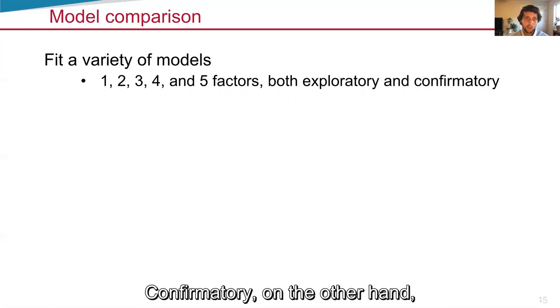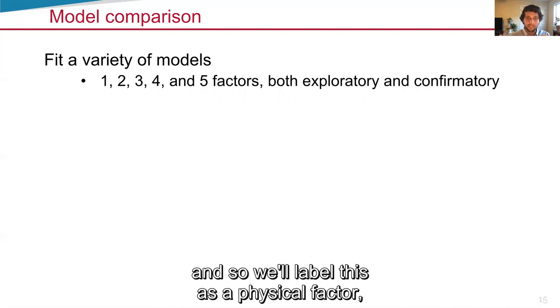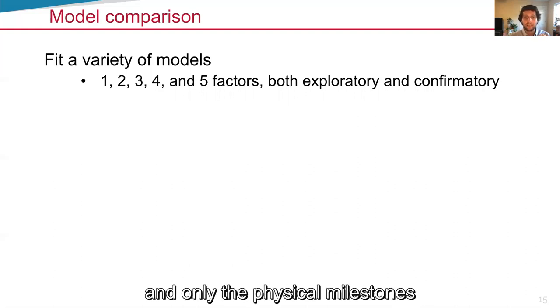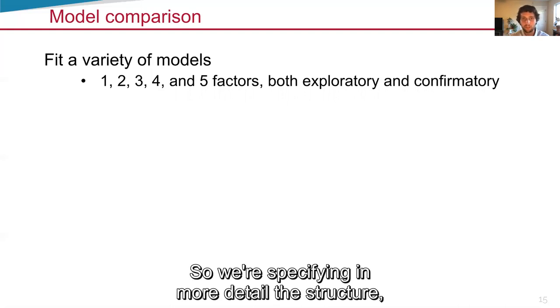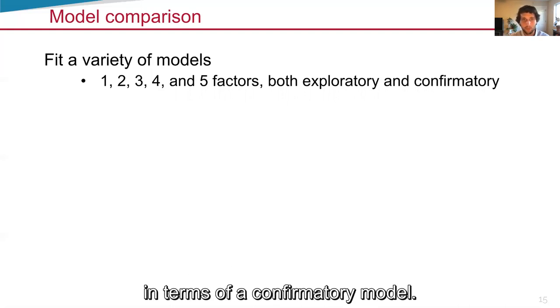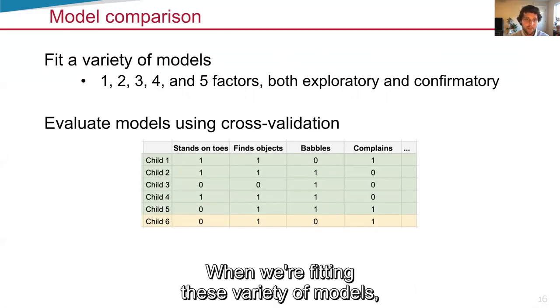Exploratory means that the model can learn that any milestone loads onto all of the factors. Confirmatory on the other hand, we say, this is a physical milestone, and so we'll label this as a physical factor, and only the physical milestones can load onto the physical factor. And same for cognitive and otherwise. So we're specifying in more detail the structure in terms of a confirmatory model.